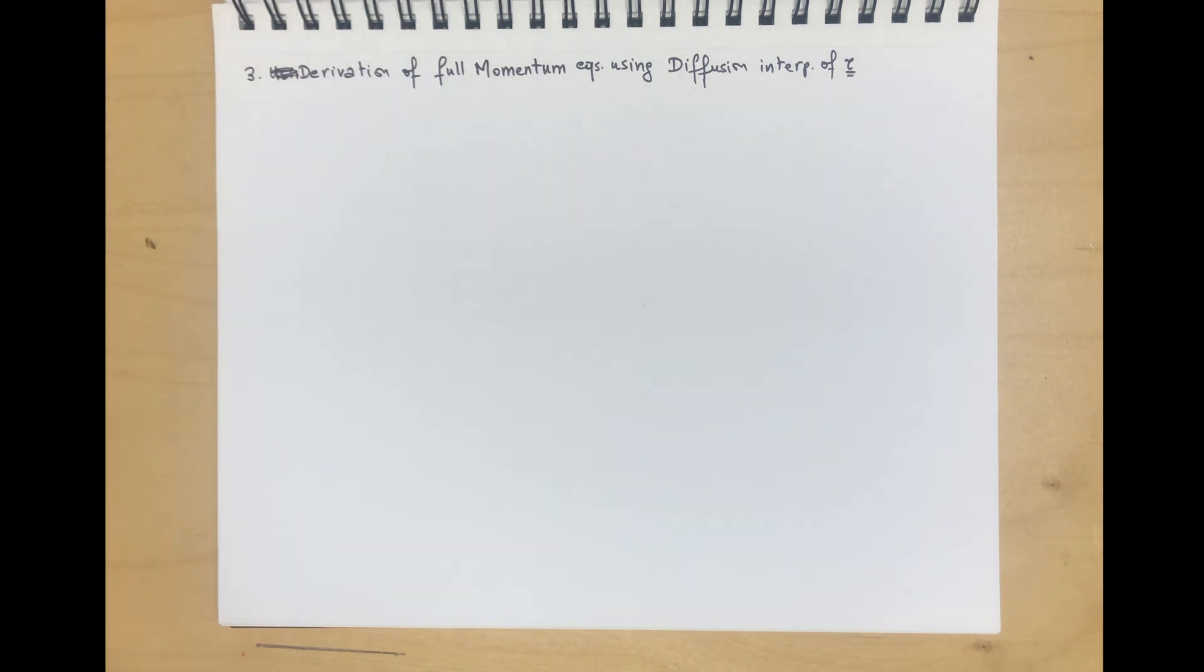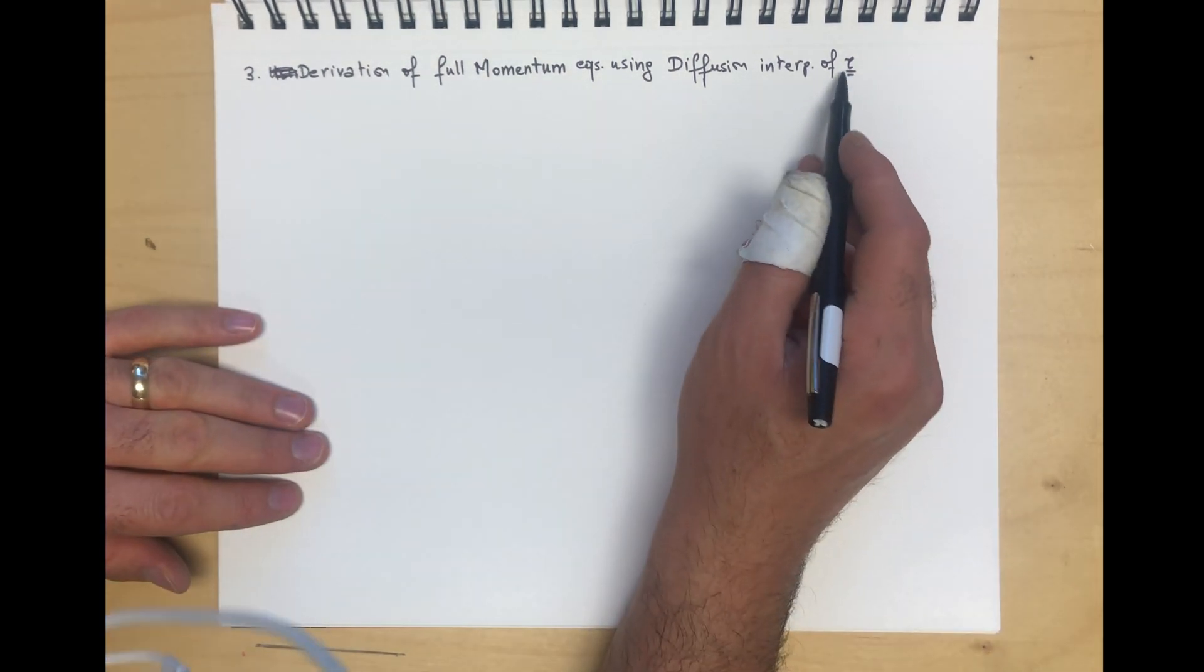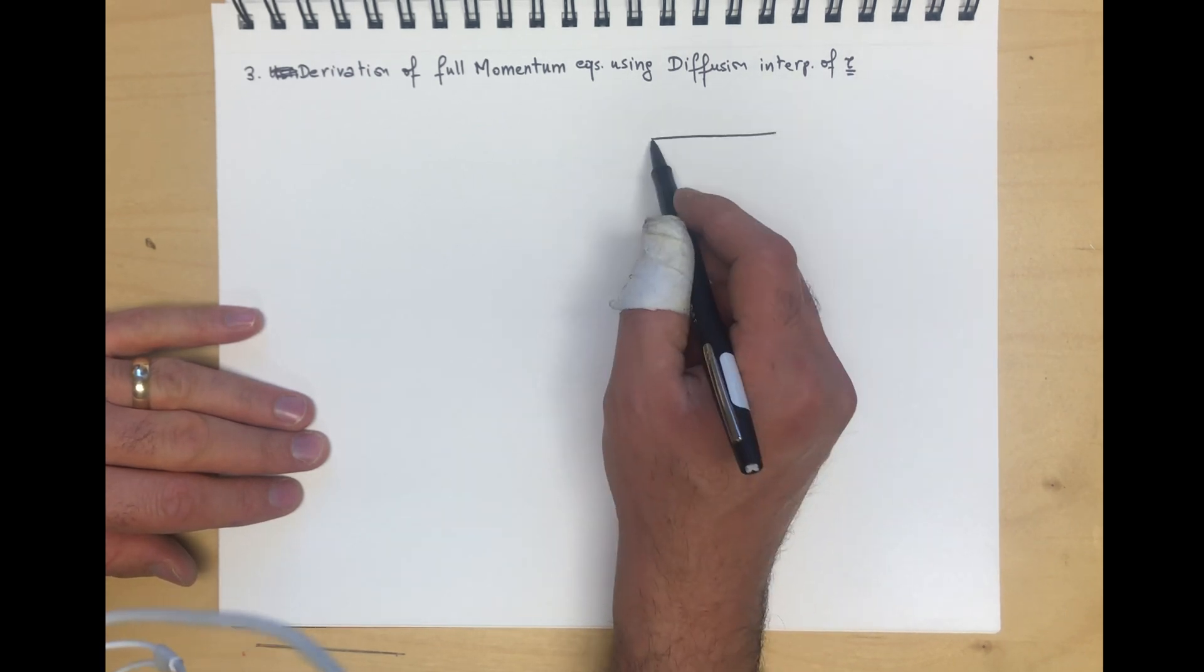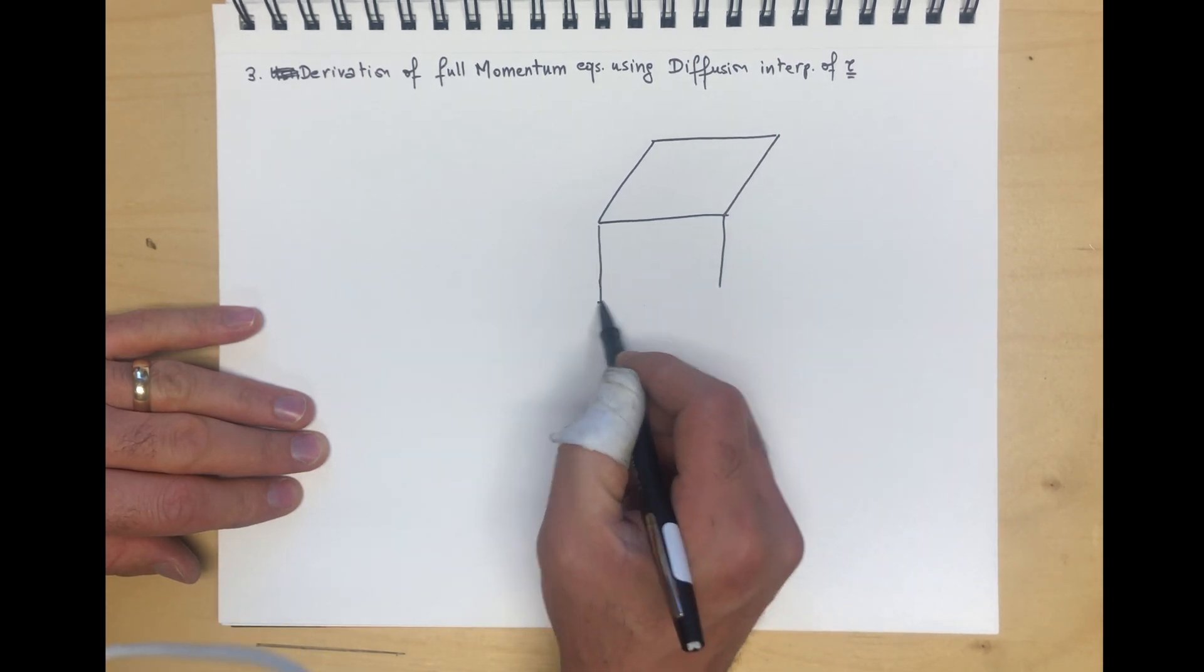In this derivation we follow the same procedure, just with a different interpretation for tau. In this case, we're going to take the same control volume.